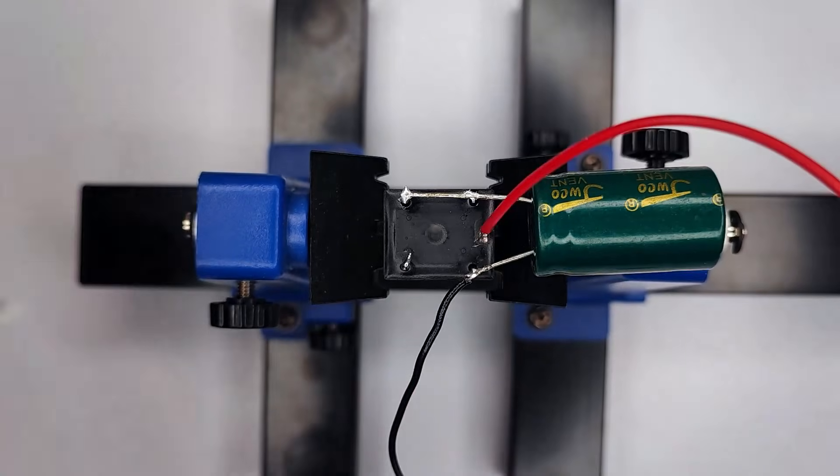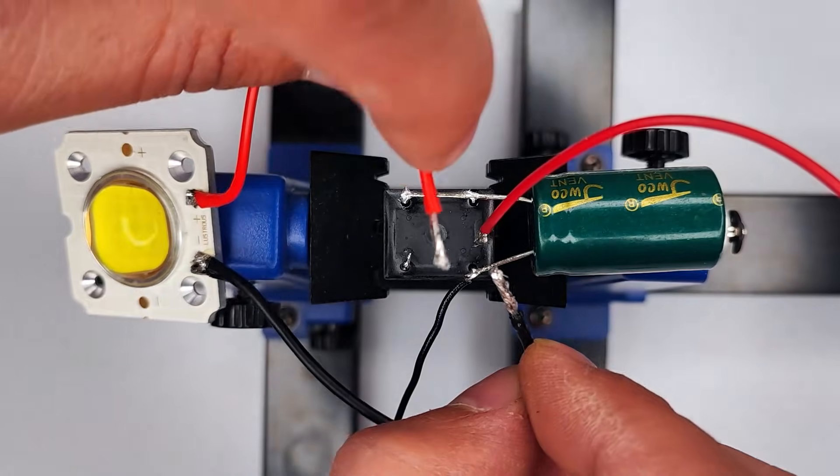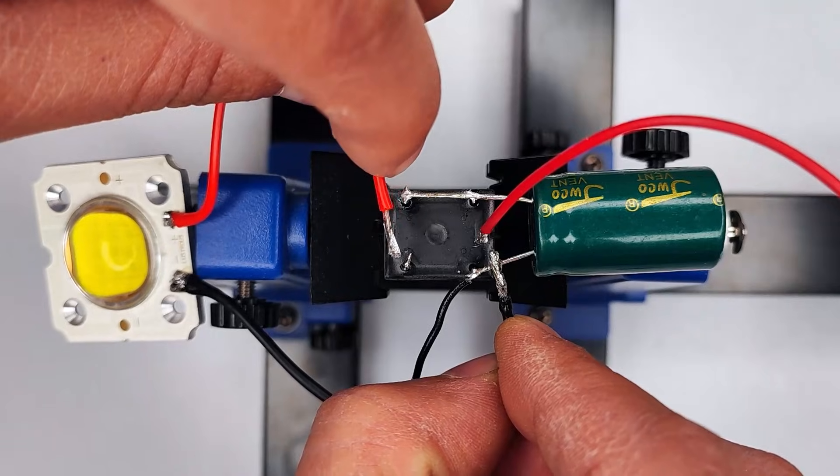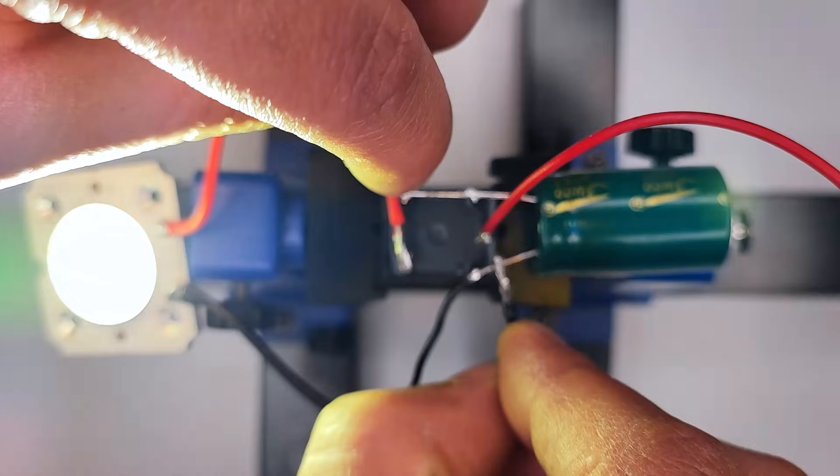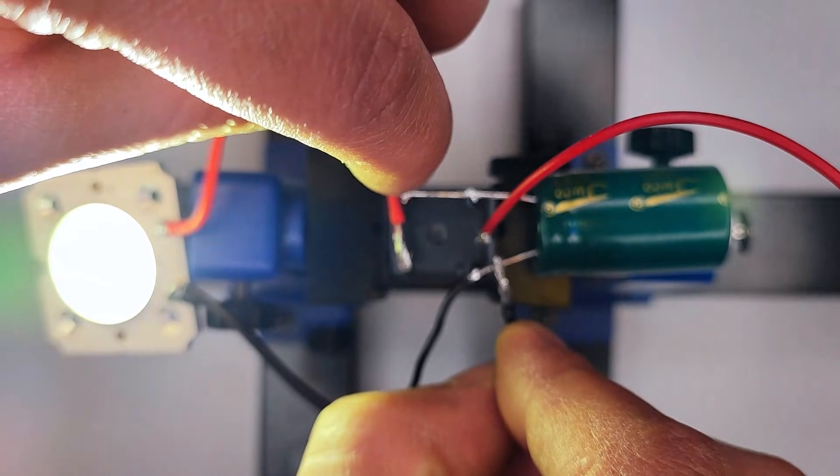Relay contacts wear out over time due to mechanical switching. Blink rate isn't ultra-stable, coil resistance varies with temperature. A bit noisy because, well, it's a real clicking relay.